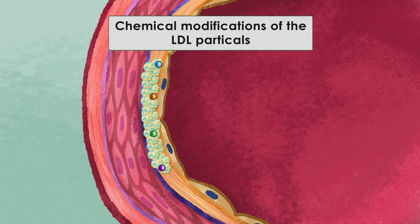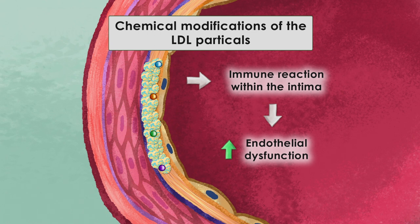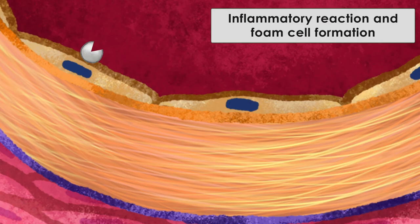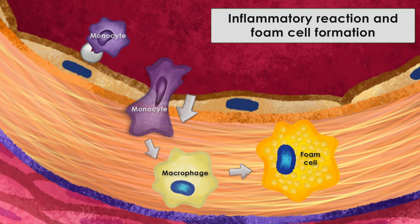This accumulation of chemically modified LDL particles provokes an immune reaction within the intima, which increases endothelial dysfunction. As a consequence of this inflammatory reaction, the endothelium gets leaky, and monocytes from the blood are able to penetrate into the intima. There, they differentiate into macrophages and engulf the chemically modified LDL particles, becoming foam cells.